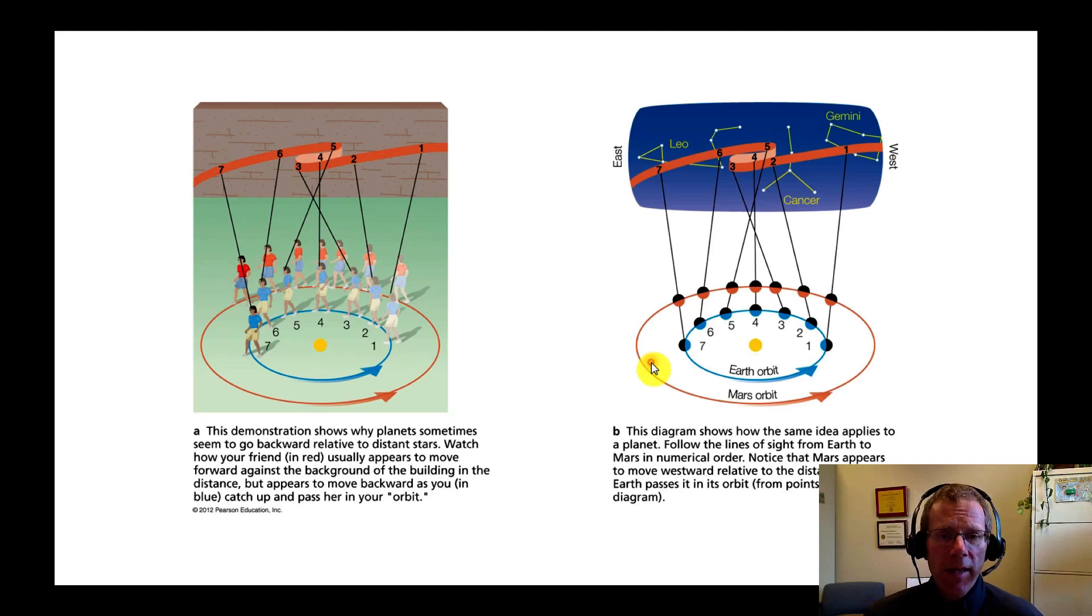So here are two corresponding diagrams. First one shows two people walking around a track. Here's a person on the inner track walking faster. Here's a person on the outer track walking slower. So the person in the blue shirt is going to be passing up the person in the red shirt. This is just a background wall. So if this person were to shoot a laser beam, or if a bunch of people were standing along the wall looking, this is what they would see. So in position one, this person's going to see, the person in the blue is going to see the person in red on this part of the wall. So here the person in blue is going to see the person in red in this part of the wall. Position three, this part of the wall.